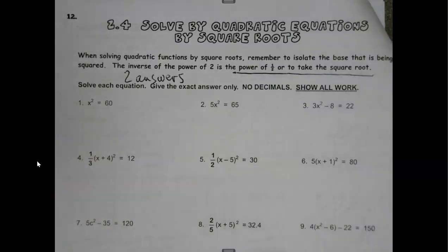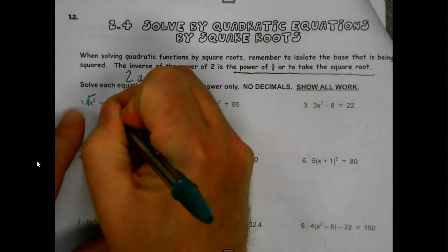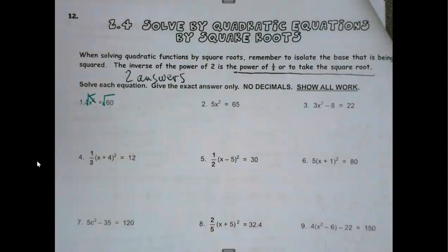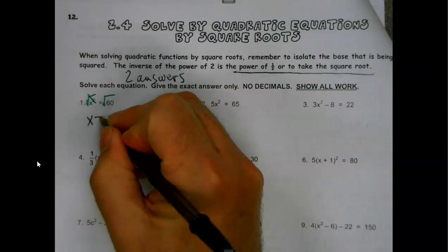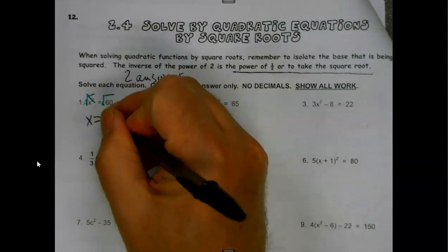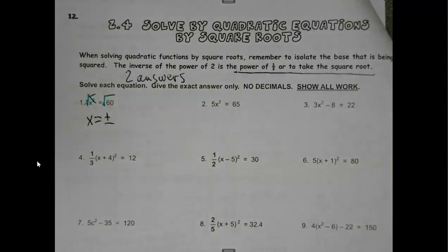First things first. Look at that right off the bat. Square root and square root go away. Whenever you do the square root step, immediately put plus minus after the equal, so you don't forget.